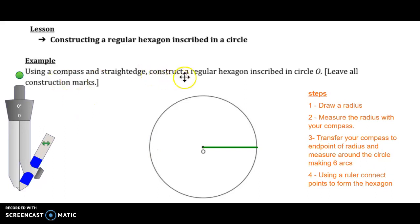Using a compass and straight edge, construct a regular hexagon inscribed in circle O. That means all the angles or vertices of the hexagon will lie on the edge of the circle.